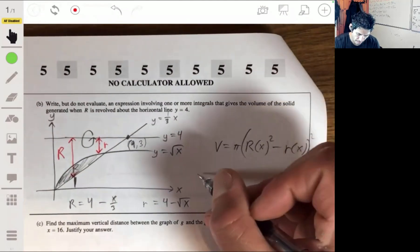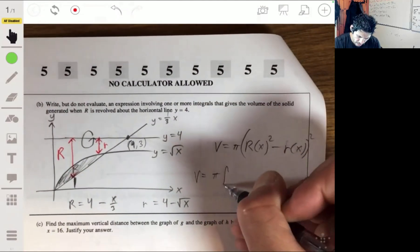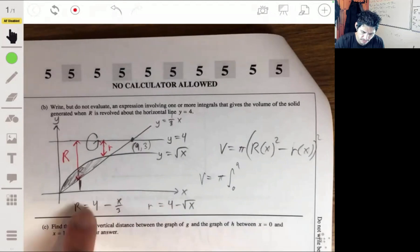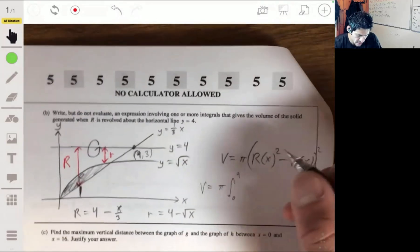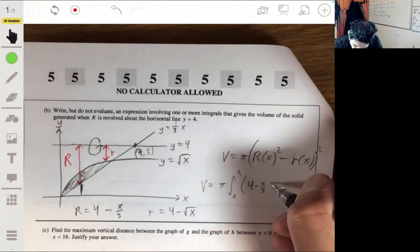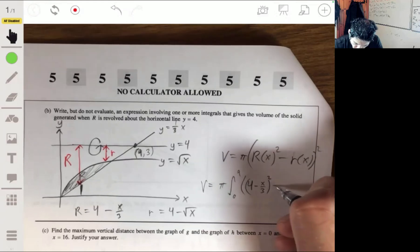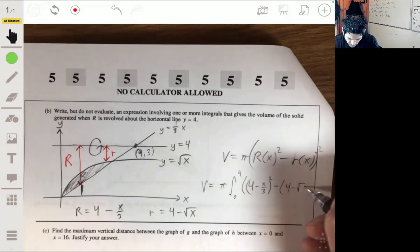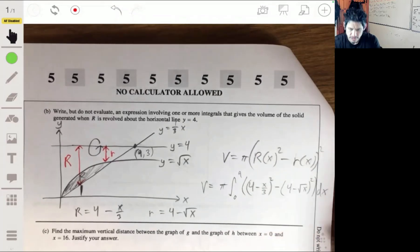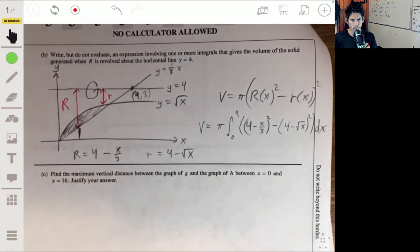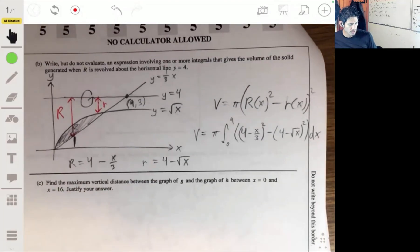And from there, we set up our integral. I integrate from 0 to 9, from left to right. And we just put this in here. So, 4 minus x over 3 squared minus 4 minus the square root of x squared dx. All right. We don't even have to solve this. That's all we have to do.